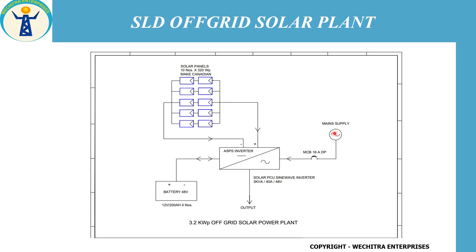This main supply connection is similar to your home inverter, where you connect some load with the inverter and connect your inverter with the main supply to charge your batteries. Whenever a power cut, brownout, or blackout happens, your batteries will give the power back to the load. In the same way this system is also working.